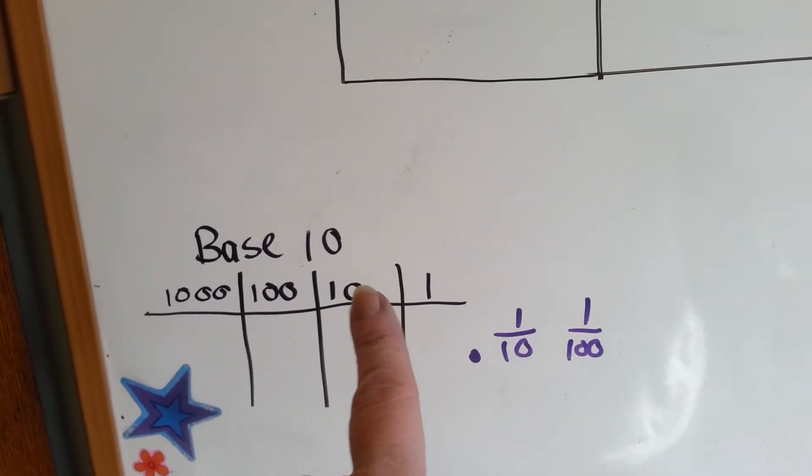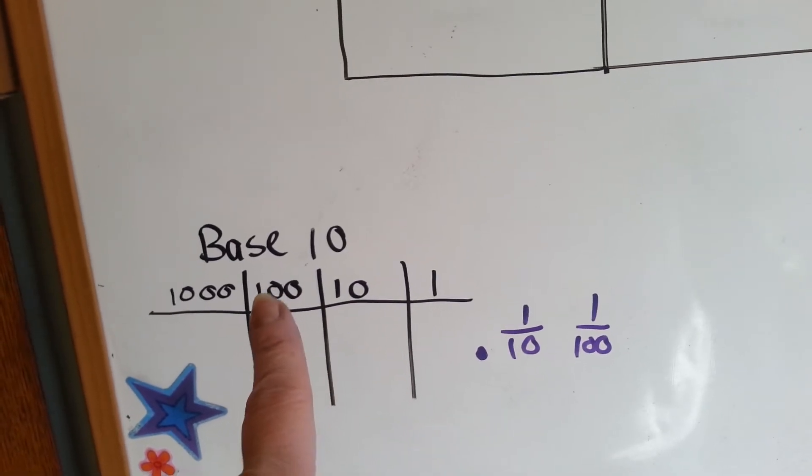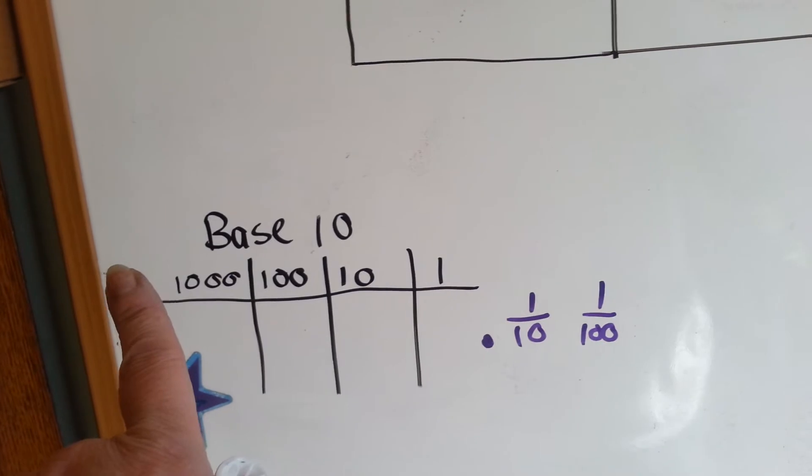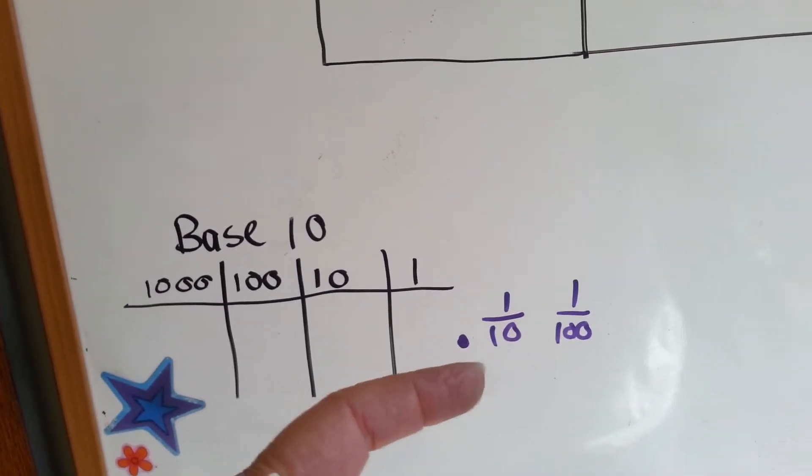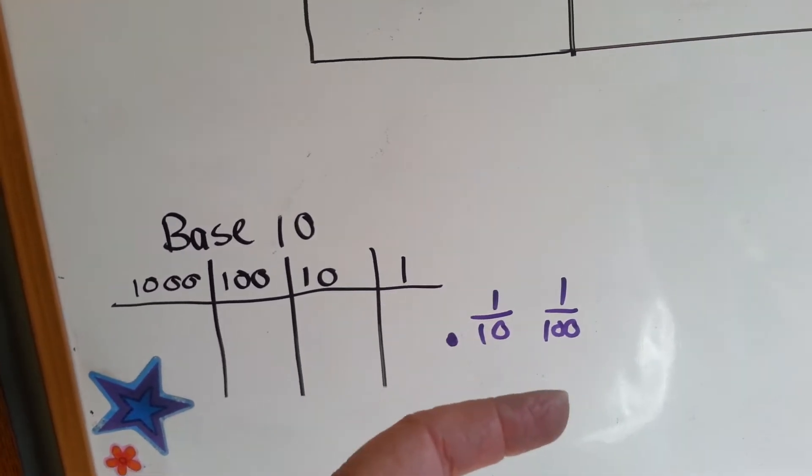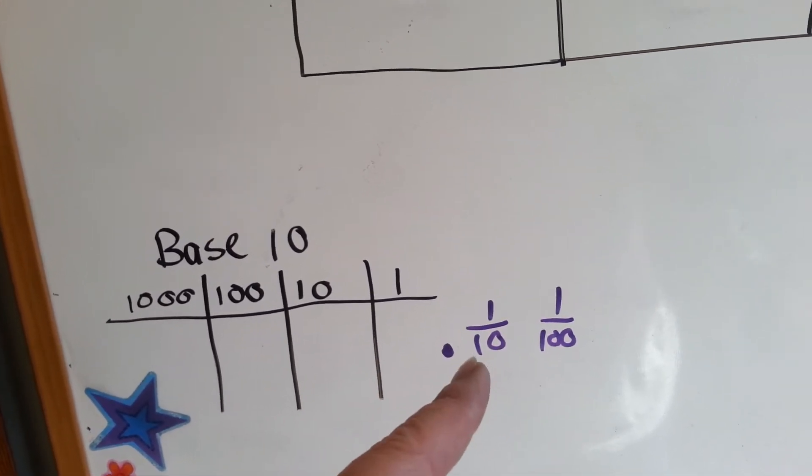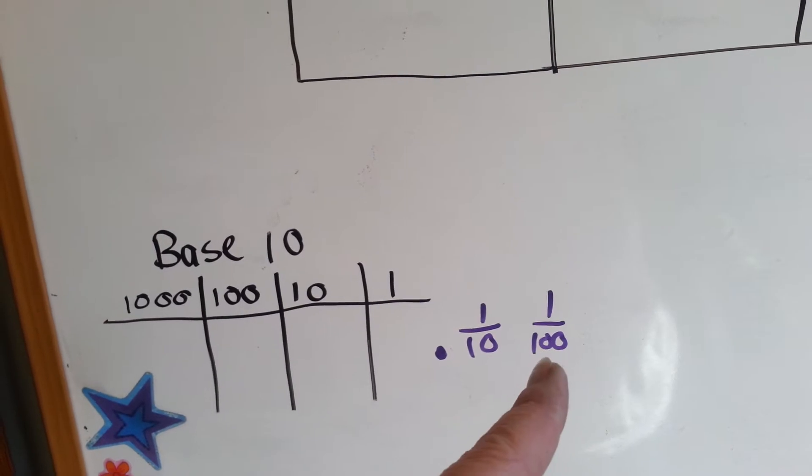One times ten is ten. Ten times ten is a hundred. A hundred times ten is a thousand. And we keep going that way, multiplying by ten to get to our next column. And then on this side, to the right of the decimal point, we divide by ten. So the first place value here would be one-tenth, and then the next one here would be one-one-hundredth.